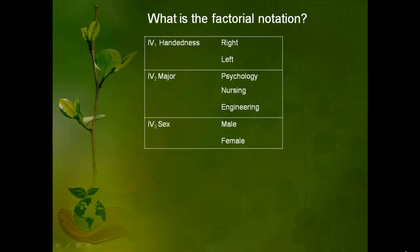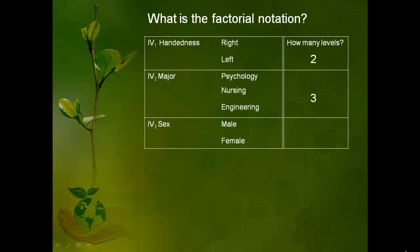Here's another example — unpause the video once you think you know the answer. So the first variable has two levels, the second variable has three levels, and the last variable has two levels. So this would be considered a two by three by two. You could also call it a three by two by two, or a two by two by three. The point is the same numbers are in each factorial notation — they're just ordered differently, and we don't really care how you order the numbers as long as all the correct numbers are in there. So any of those three answers would be correct.